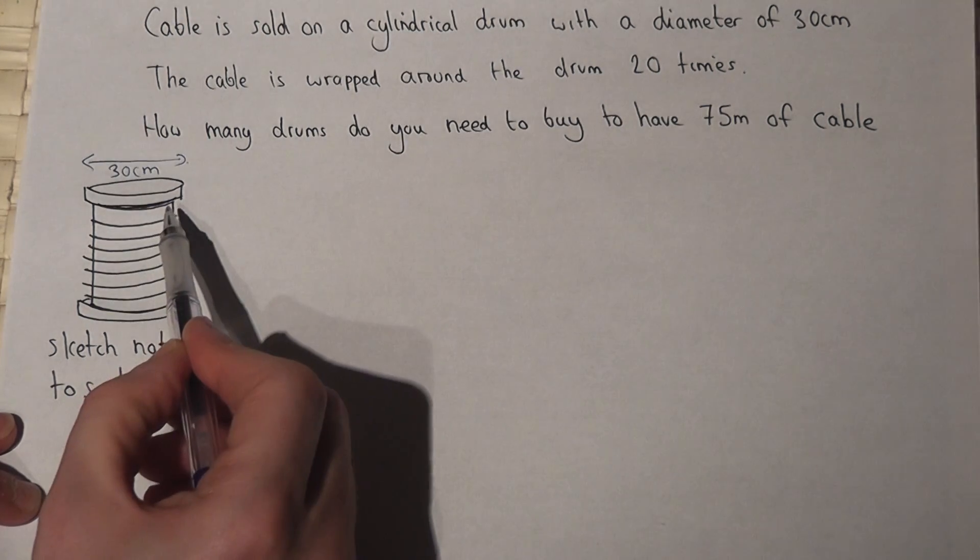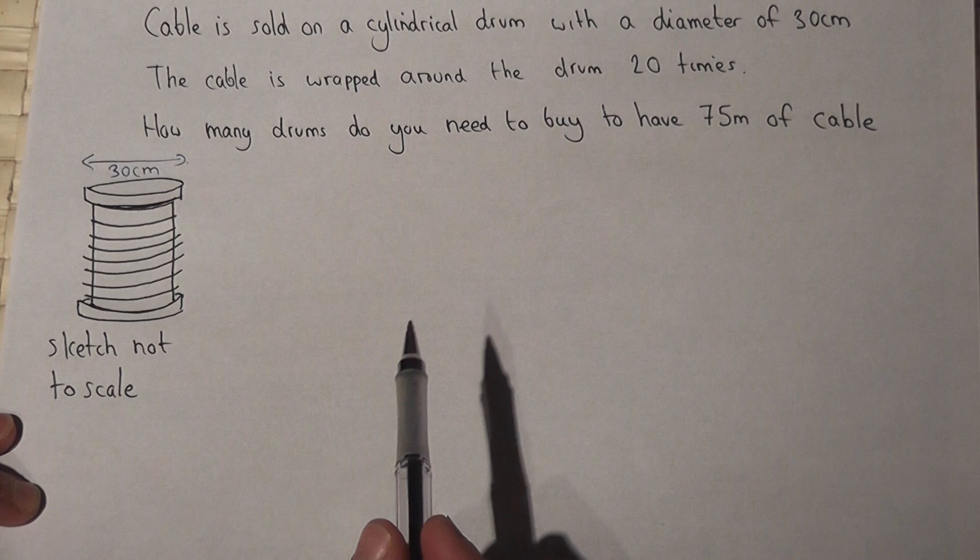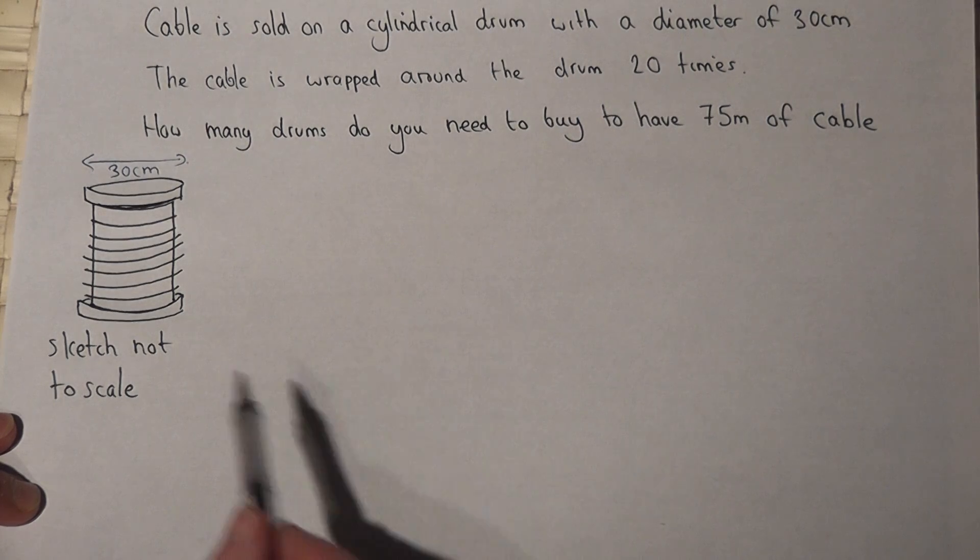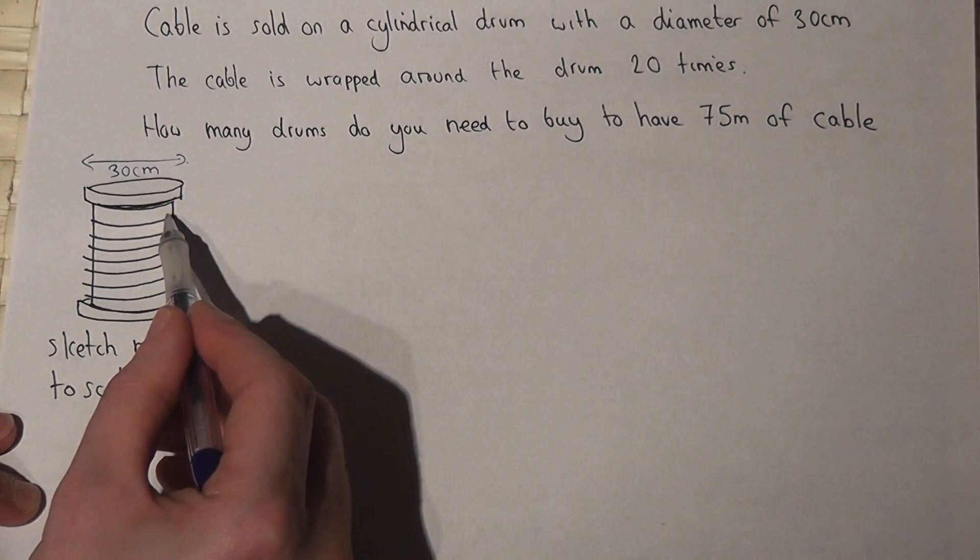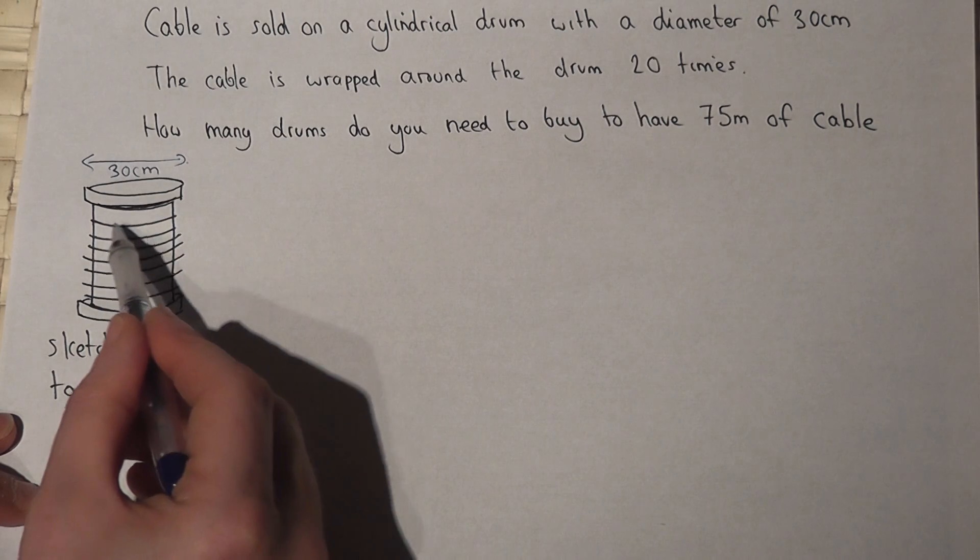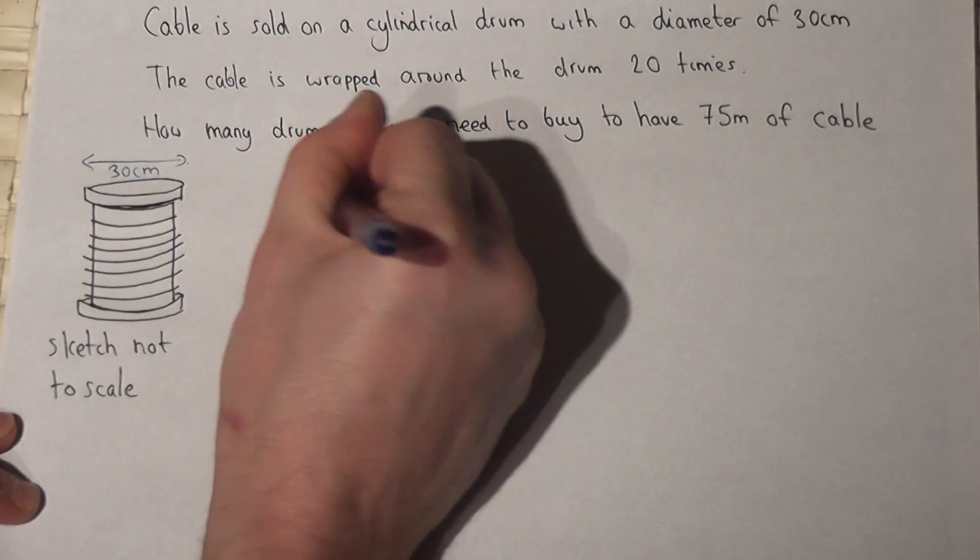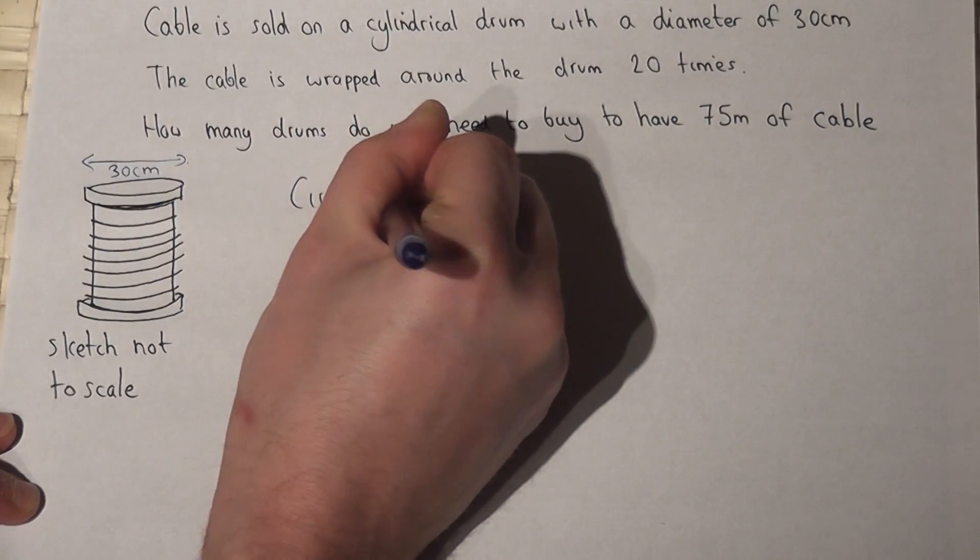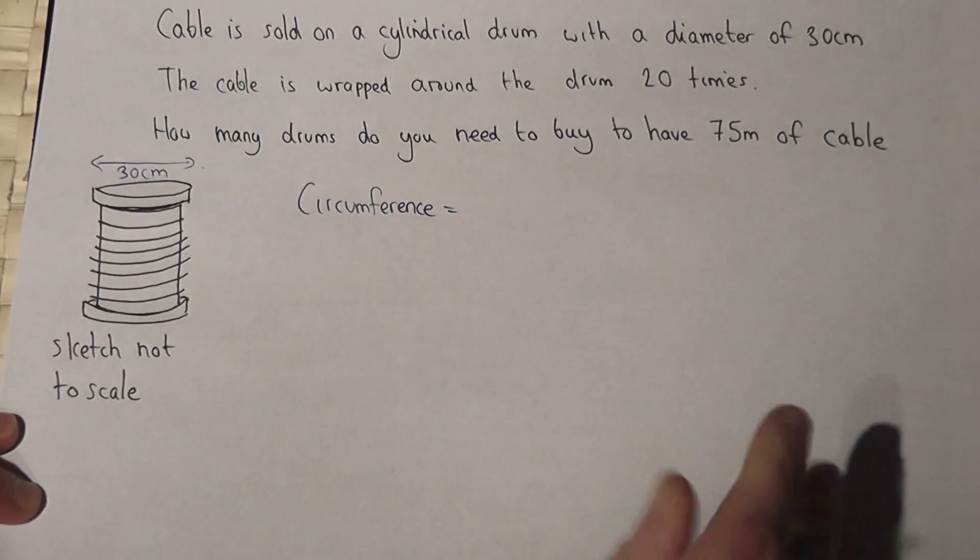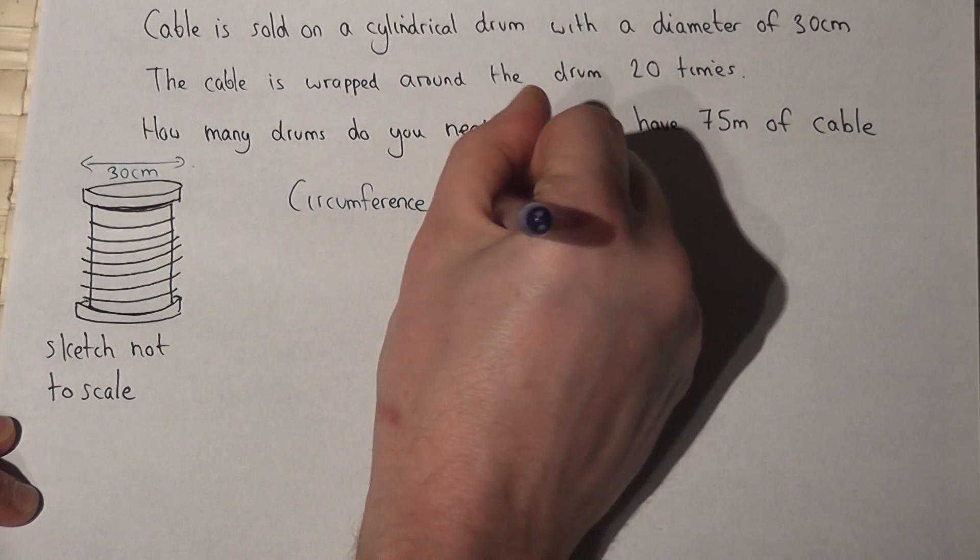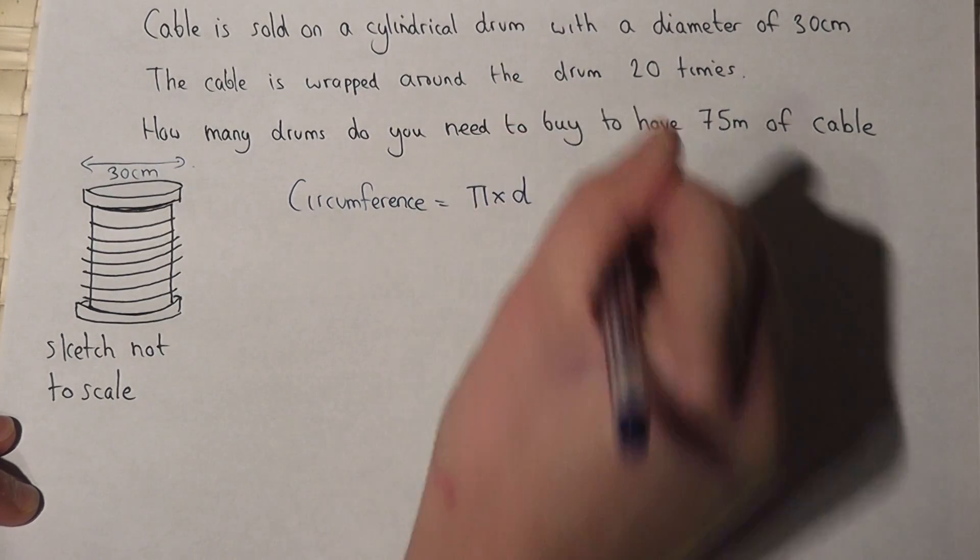The cable is wrapped around 20 times, so I can find how much cable is on one loop around the drum. That will be given by the circumference of the drum, and that's given by pi times the diameter.